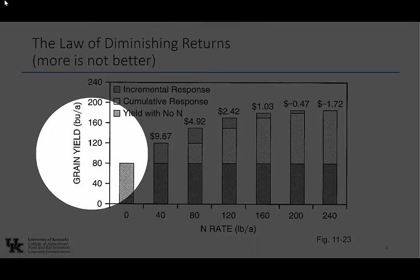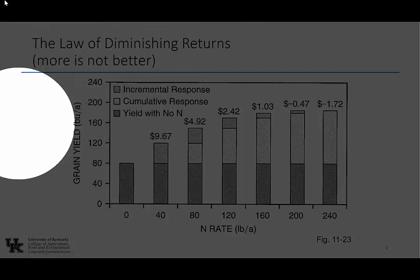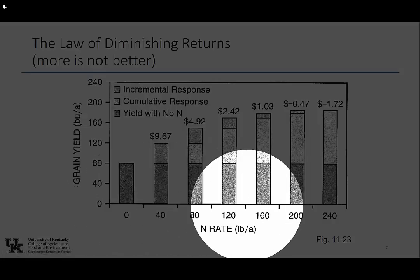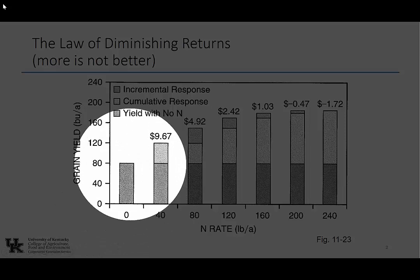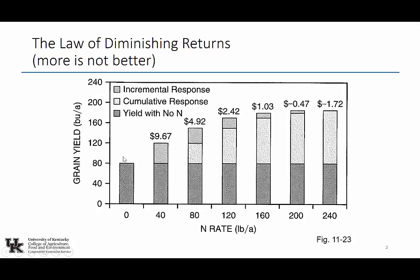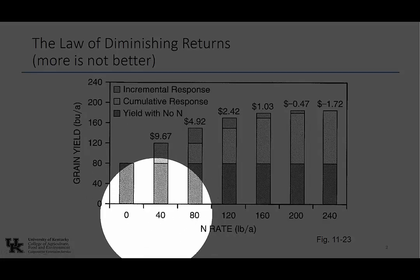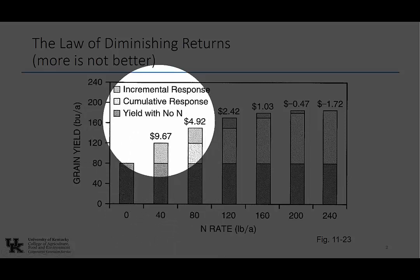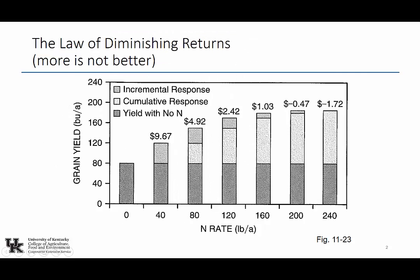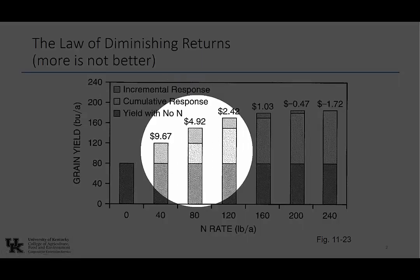Grain yield in bushels per acre is on the vertical axis. Nitrogen rate on the horizontal axis in pounds per acre. Zero pounds per acre in this field gave me 80 bushels per acre of yield — that's my base, what I'm getting out of the soil. Nitrogen from the organic matter: you're getting about 60 pounds of nitrogen per percentage of organic matter, so maybe this is 2–3% organic matter soil. My first increment in this study was 40 pounds per acre of nitrogen, and I got about 40 bushels, giving a return of $9.67.